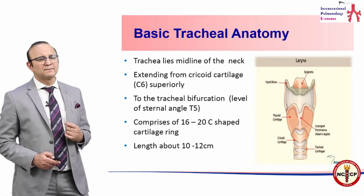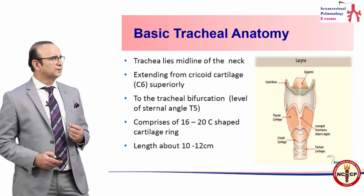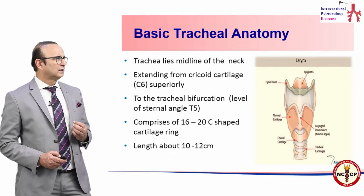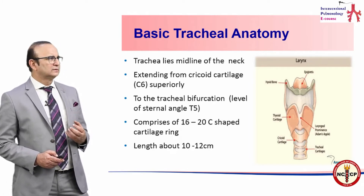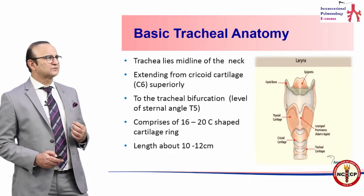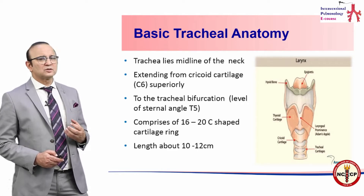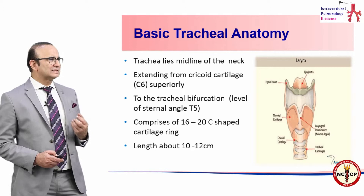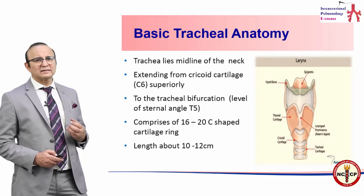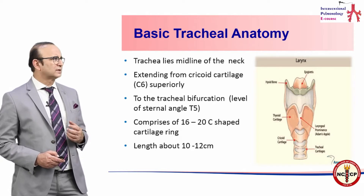Before going into the details, let us understand the basic tracheal anatomy. The trachea lies in the midline of the neck. It extends from C6 to T5 and comprises 16 to 20 C-shaped cartilage rings, with a length of about 10 to 12 centimeters.